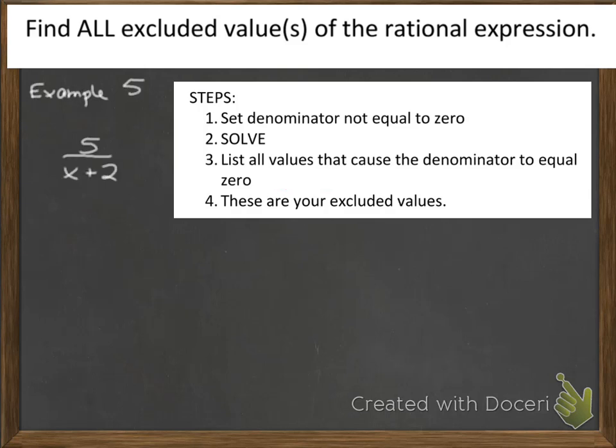Let's look at example 5. This is getting a little bit more interesting, because now I have a binomial in the denominator x plus 2. So remember, I can't let x plus 2 equal 0. So I have to solve this. This is still a basic one-step equation. I solve it by subtracting 2 from both sides of the equation, and I find out that x cannot be equal to negative 2.